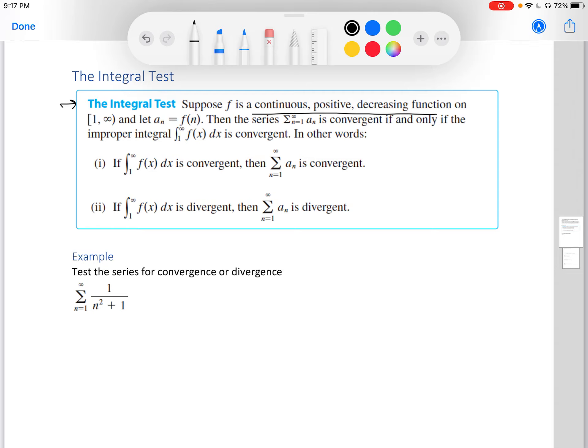If the integral from 1 to infinity is convergent, then its sum is convergent. And similarly, if the integral from 1 to infinity of f(x)dx is divergent, then so is the sum.